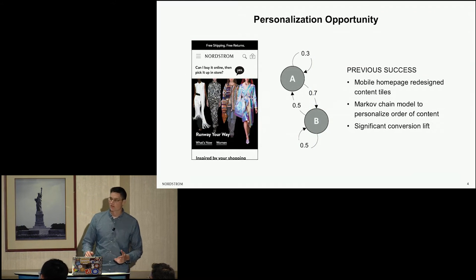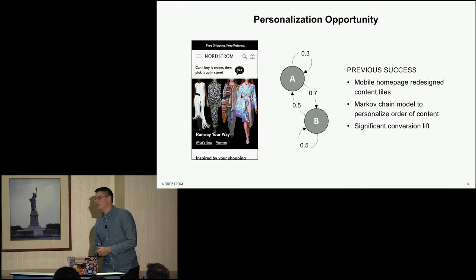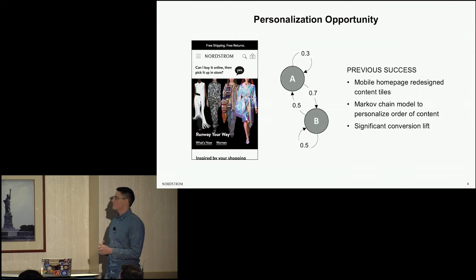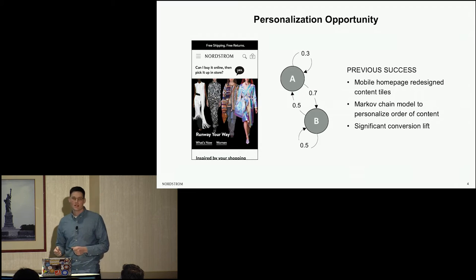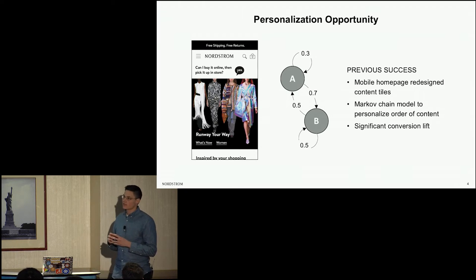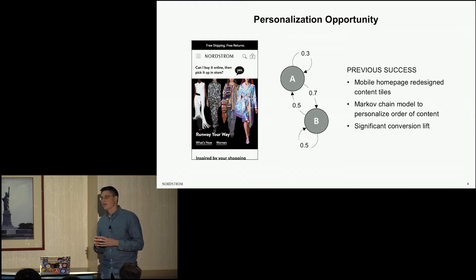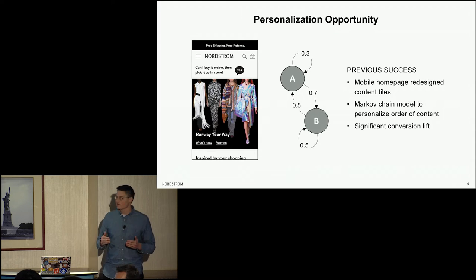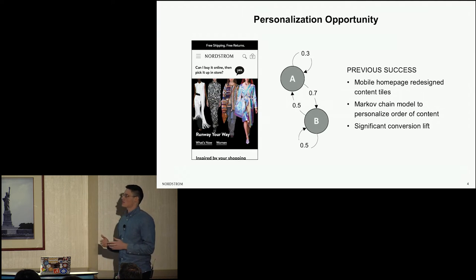Specifically for Nordstrom, I know there's a personalization opportunity for our recommendations in real time. I recently worked on a project before doing this hackathon where I helped personalize the order of content on our mobile homepage. On our mobile homepage, we have this series of content tiles — some of them are fixed marketing initiatives, but others are more product-based, and we have the freedom to rearrange those based on shoppers and their preferences.